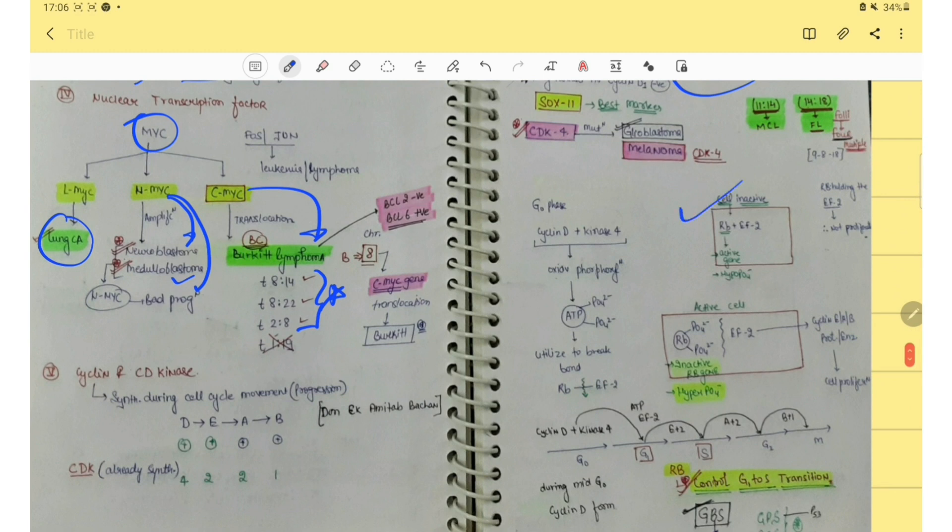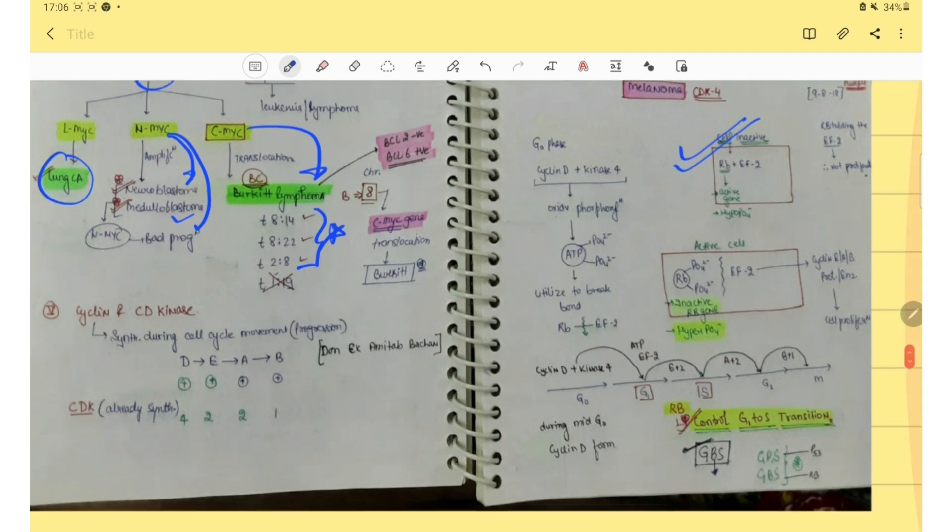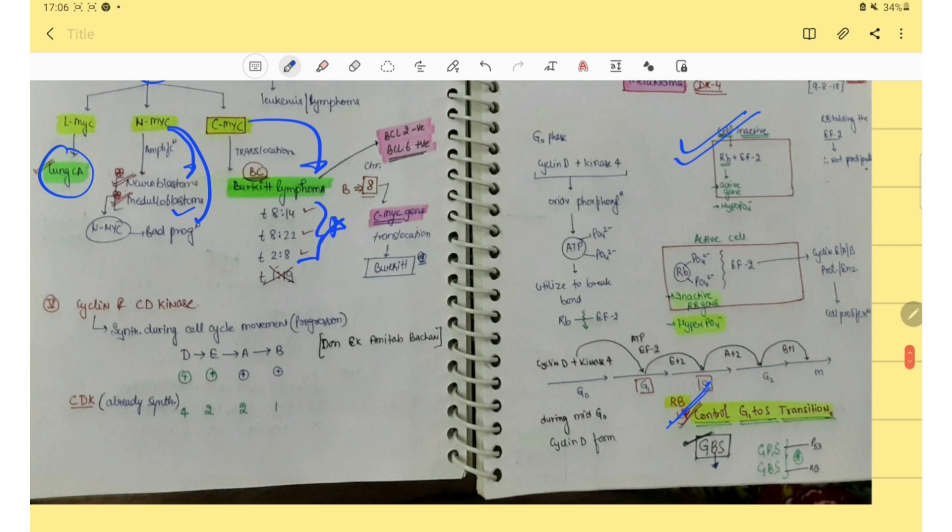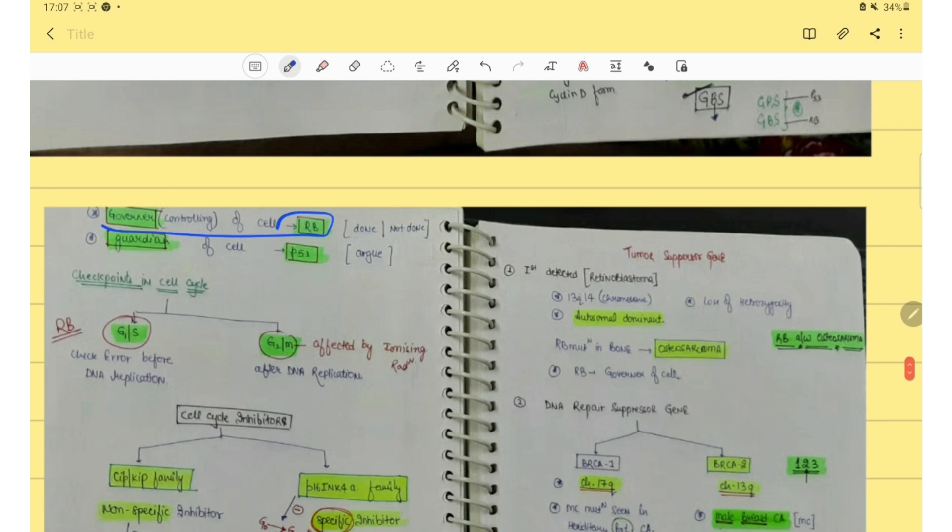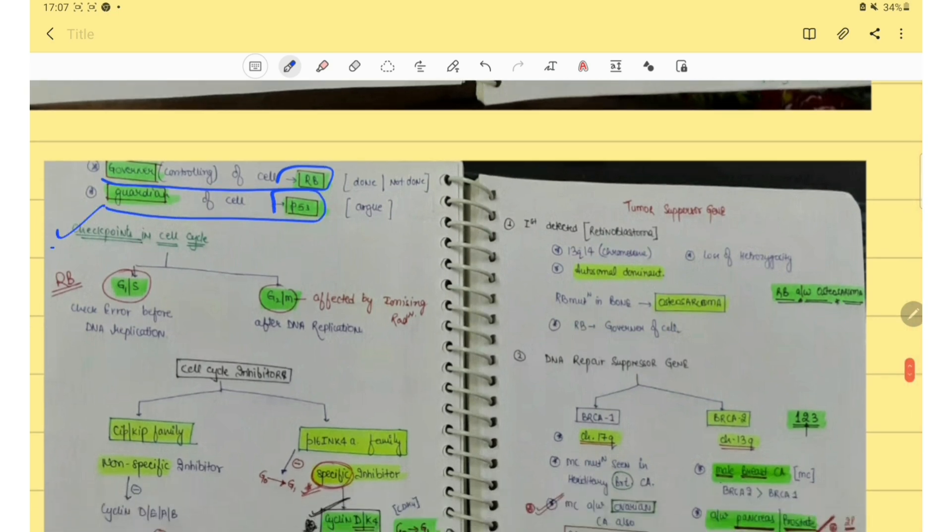Retinoblastoma gene. This is also very important. RB gene controls the G1 to S phase transition. The governor of cell is RB gene and guardian of cell is P53. There are some checkpoints that is G1 to S phase and G2 to M phase. G1 to S phase checkpoint is through RB gene.